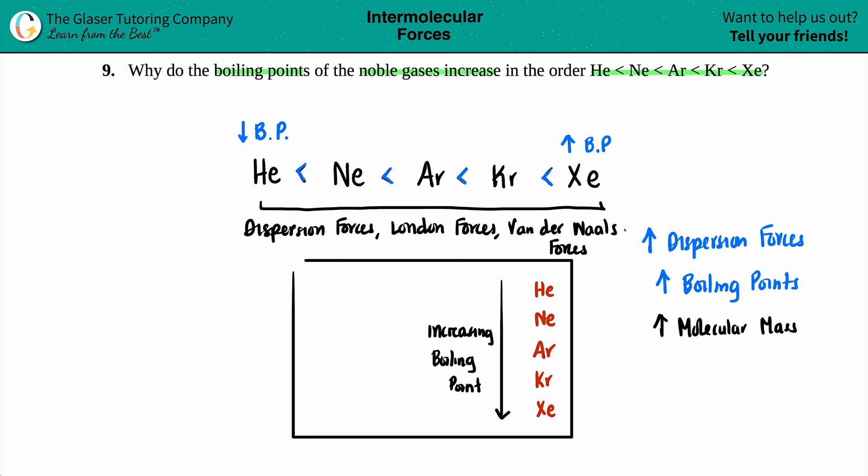So if I just highlight this, there we go. That's good enough. We'll do a straight line, straight line. Beautiful. So if we look on the periodic table, we'll see that since we're going down the group, we're increasing in boiling point because you're increasing in molecular mass. The more mass you have, the more dispersion forces, the higher the boiling point.